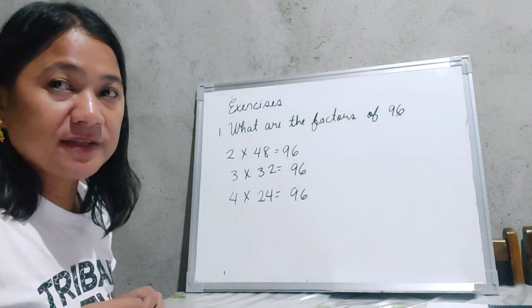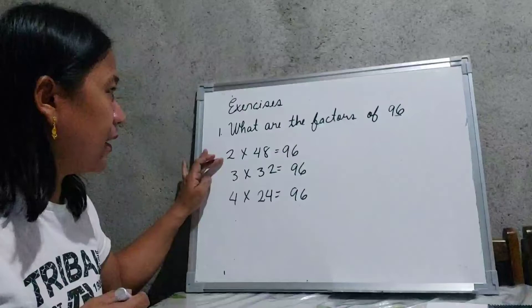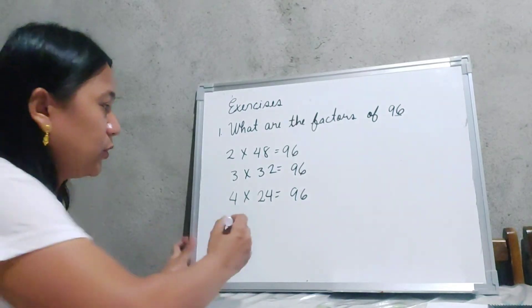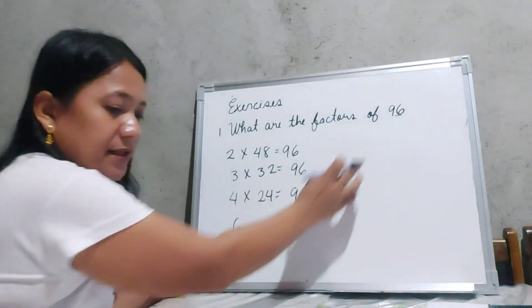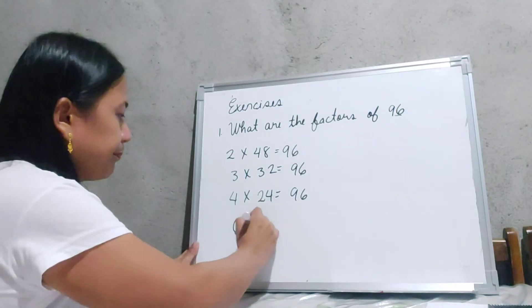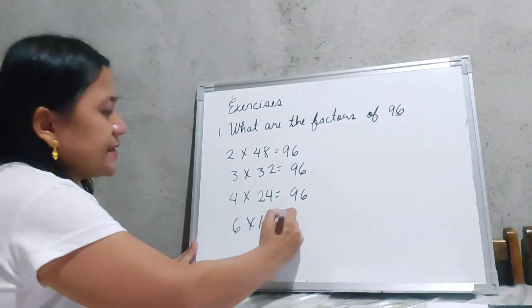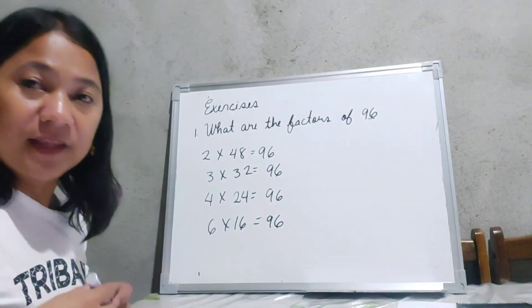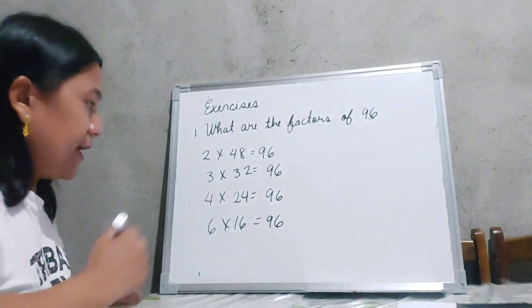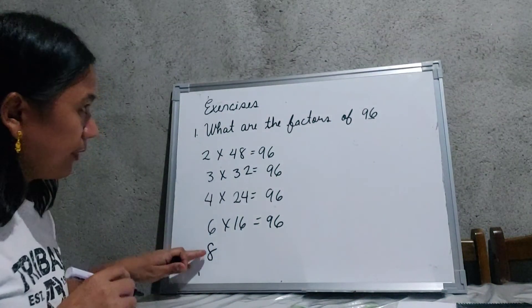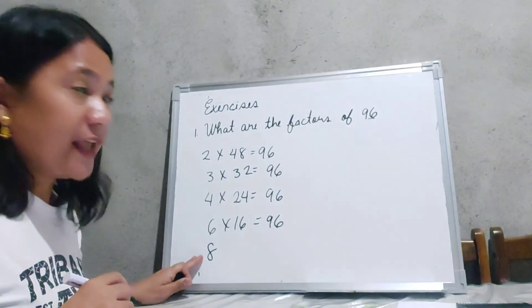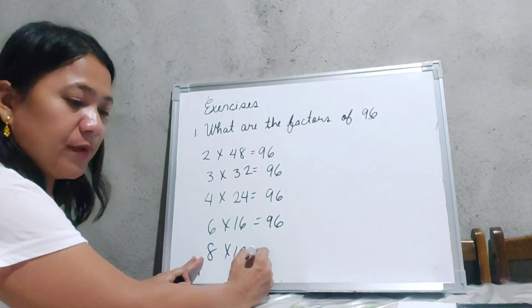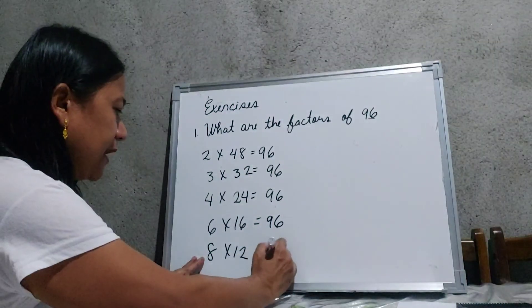Another factor of 96 is 6, because since we can divide both 2 and 3 into 96, it is also divisible by 6. Also, 96 is divisible by 8, and when we divide 96 by 8, it gives us 12. So 8 times 12 is equal to 96.